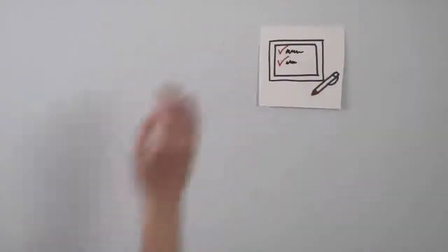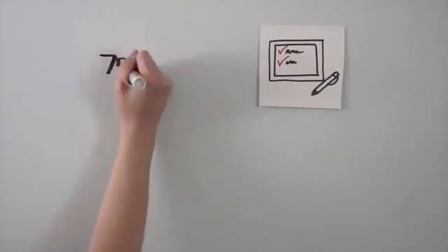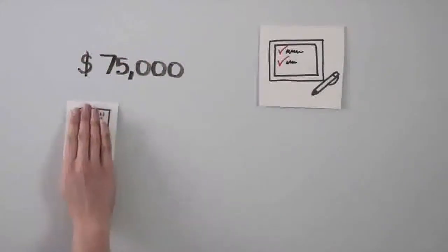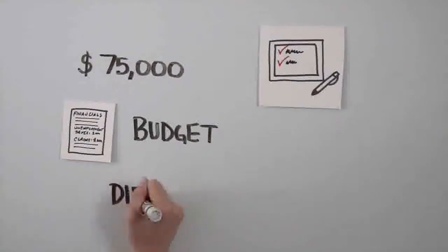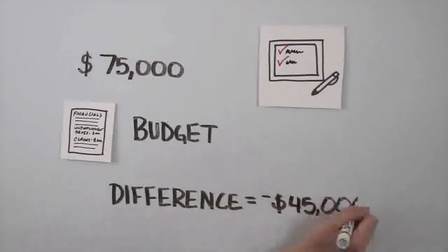However, if reimbursing, let's say your claims for the year were $75,000 instead of $15,000, but you only budgeted $30,000 for SUI, resulting in a difference of negative $45,000.